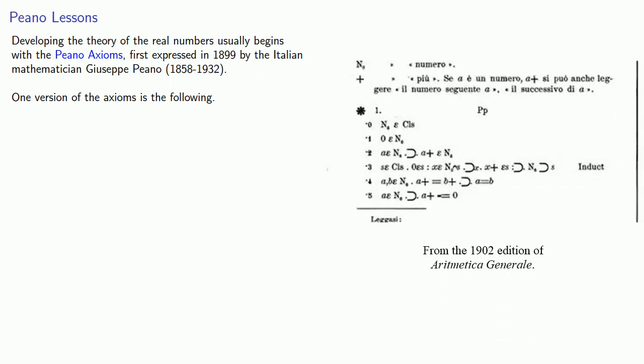First, there is some set N, which we call the set of natural numbers. Now, remember, one of the questions that you should always ask when you're presented with a set is, is there anything at all in the set? And so the first axiom is, there is an element zero in the set of natural numbers.